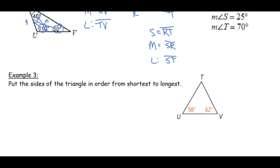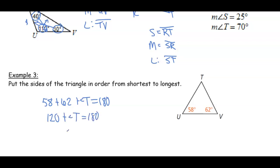How can we put these sides in order from shortest to longest? We have two angles, so we can figure out angle T: 58 plus 62 equals 120, plus angle T equals 180, which means angle T is 60 degrees. The shortest side is TV, opposite the smallest angle. The medium side is UV. And the longest side is TU.